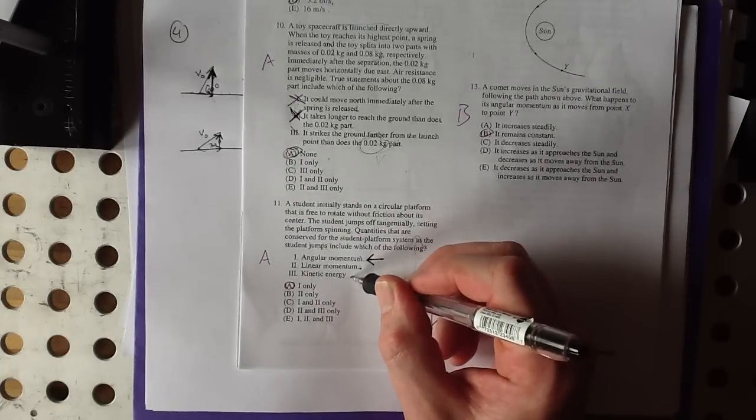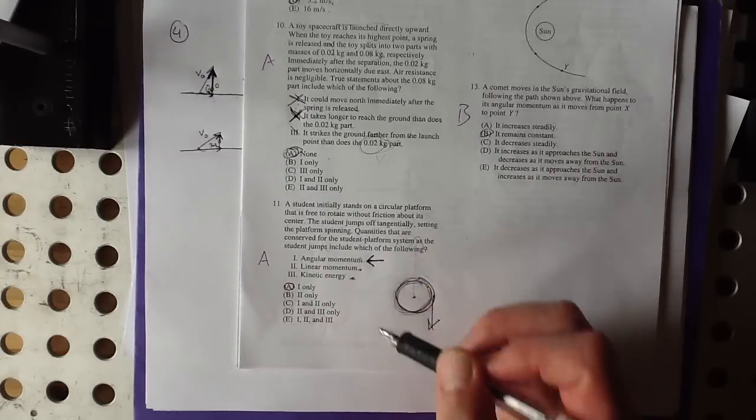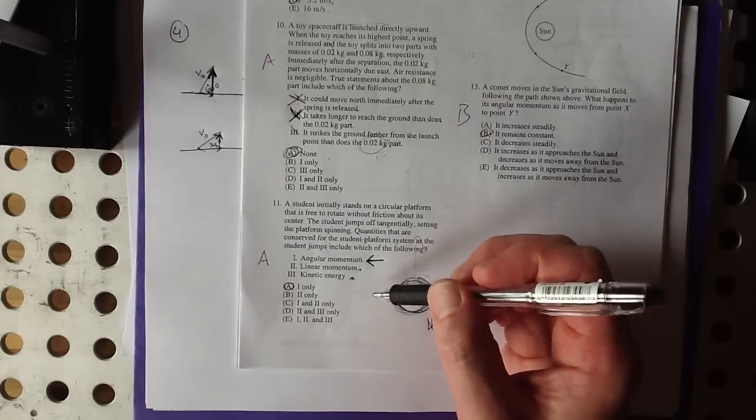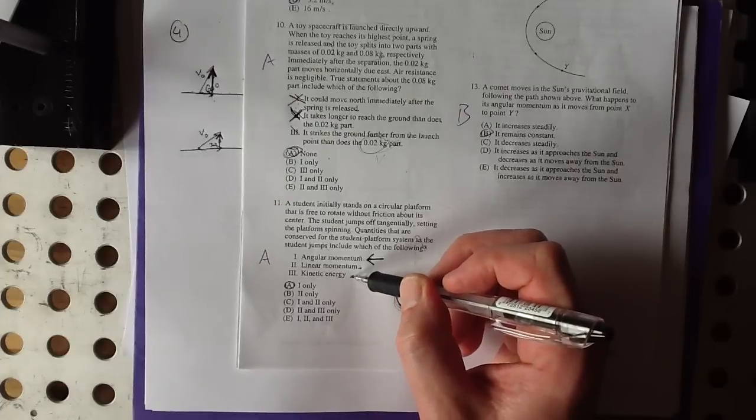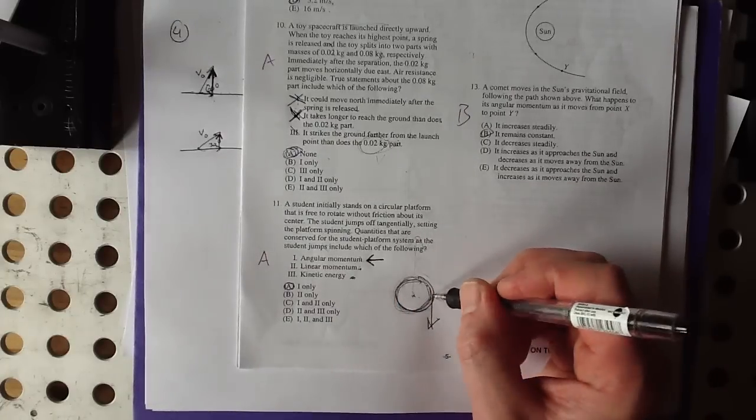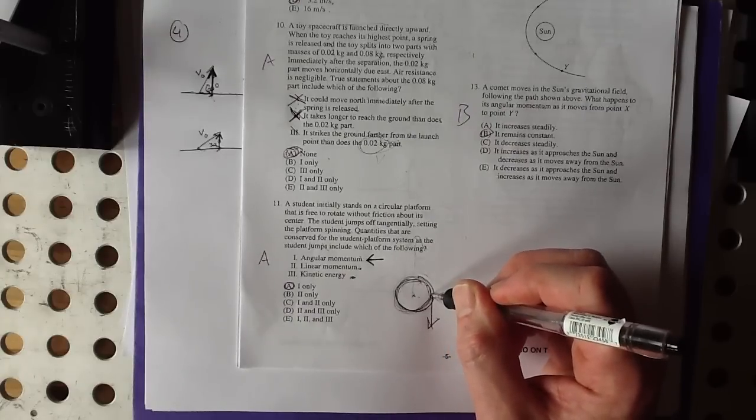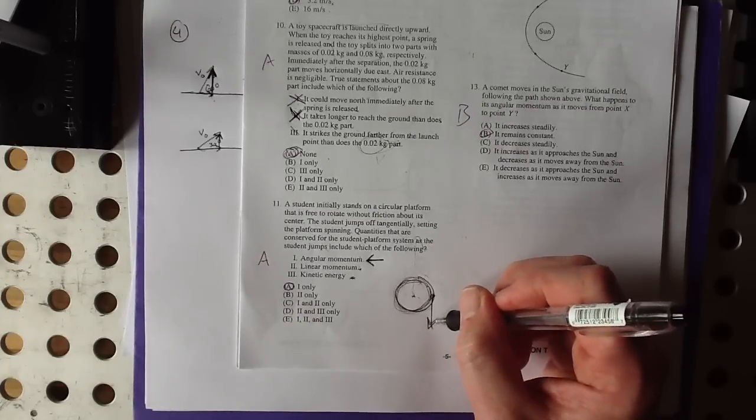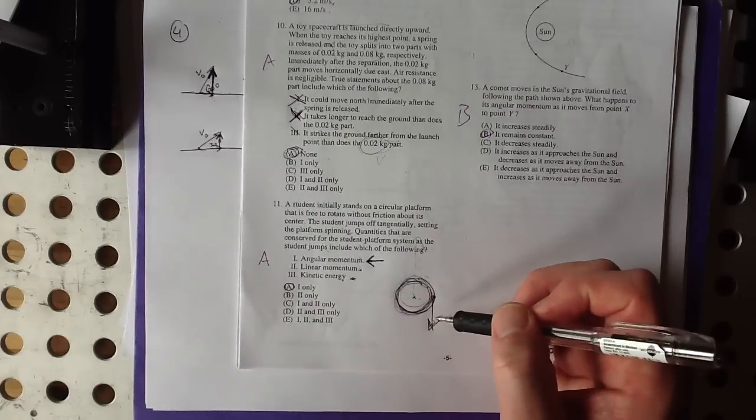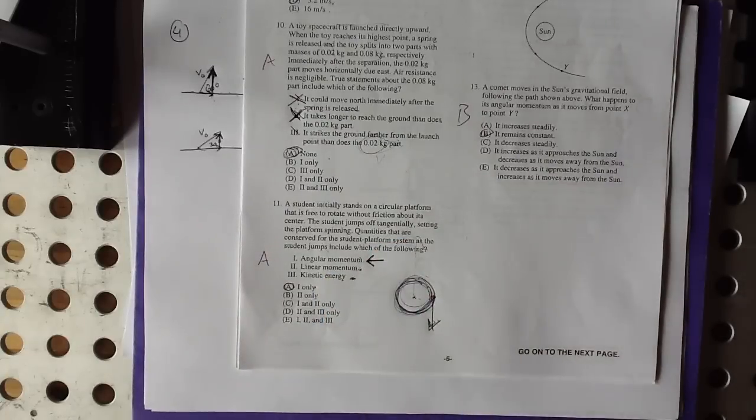And kinetic energy? Well, that's conserved sometimes. Actually, usually total energy is conserved. Kinetic energy is conserved in elastic collisions, right, where things don't stick together. And these things are not sticking together, but at the beginning, there was no kinetic energy, right? Everything was stationary. And at the end, student has some, and this has rotational. So we're going from zero kinetic energy to having energy. So that's not conserved either. So the correct answer is one only.